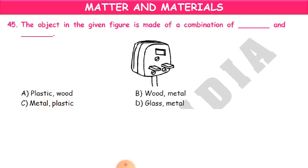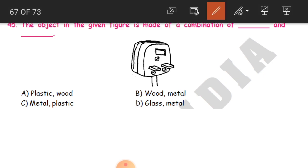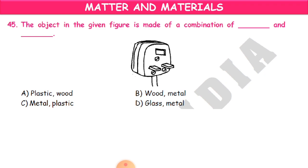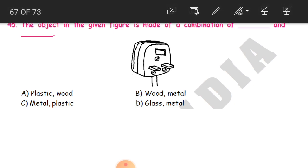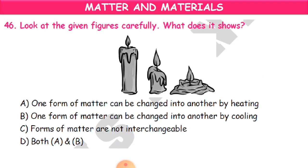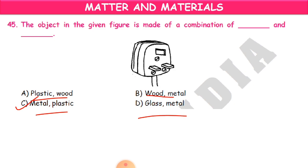Question 45: The object in the given figure is made of a combination of what materials? The object is a switchboard — actually a plug point. Do we use plastic and wood, wood and metal, metal and plastic, or glass and metal? The answer is metal and plastic. We use metal and plastic to make a switchboard or plug point.